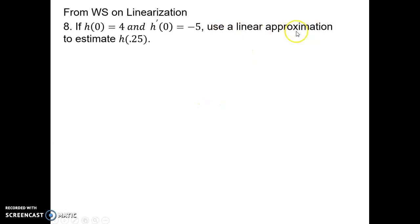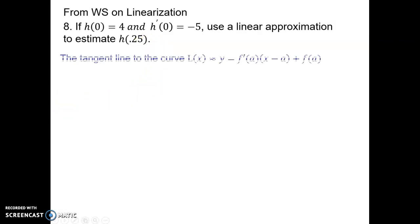I don't have a function, but I can still use a linear approximation formula to estimate what my cost will be 0.25 months from now, or 2.25 months from this point in time. We're going to use the same idea here — first find the tangent line to the curve. I don't have a function, but I have enough information to find the tangent line because I know the rate of change, which is the derivative there. I know the point of tangency is at t equals 0, and the value of the function there is 4.